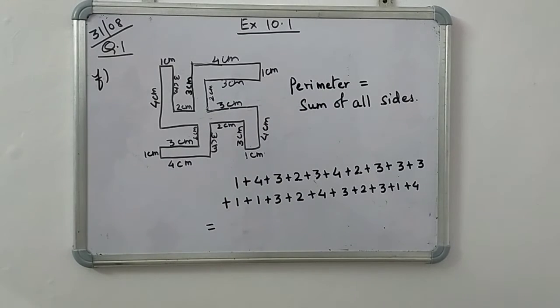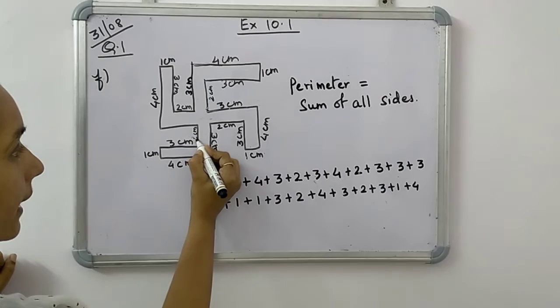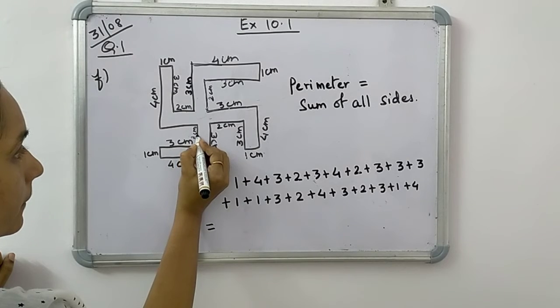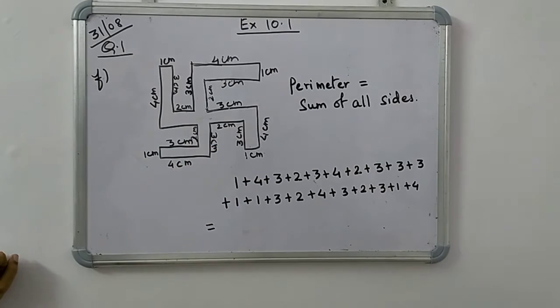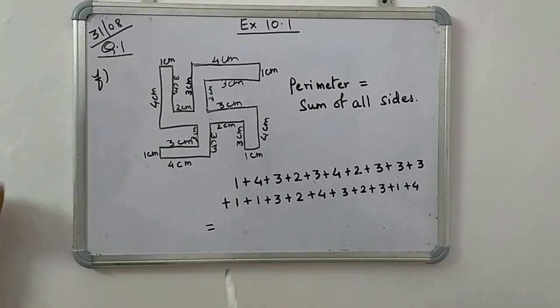It's better you look at in your book and add all the dimensions. And when you add all the dimensions you will get, when you add because perimeter is equal to sum of all sides.